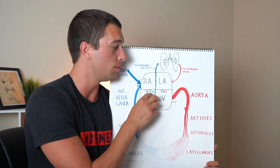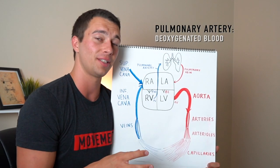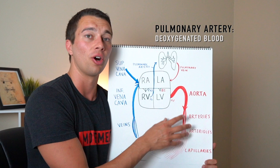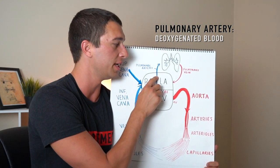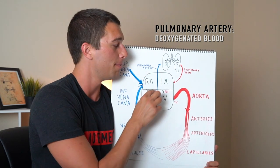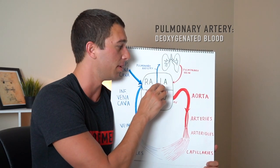So this is the one artery that's actually deoxygenated blood. Most arteries are oxygenated but because this is going away from the heart into the lungs, it's an artery, it's a pulmonary artery but it's carrying deoxygenated blood.